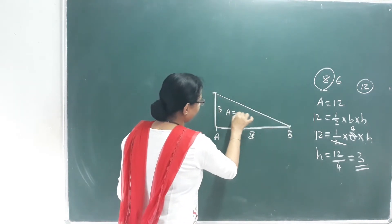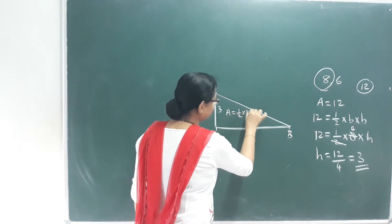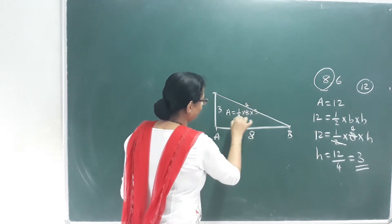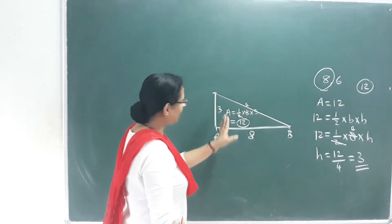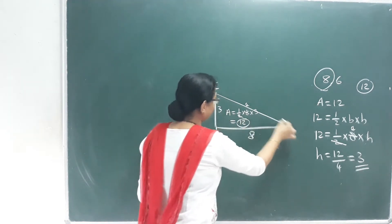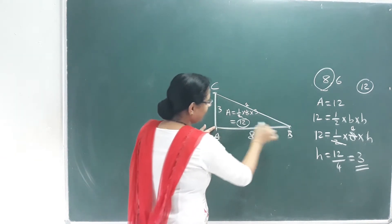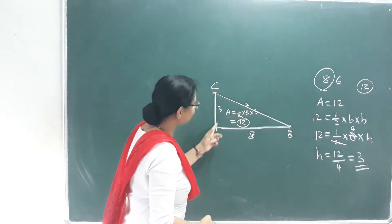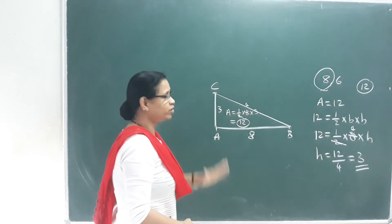If you look at the area, it equals half times 8 times 3, which gives 12. So this is 12. This confirms a valid triangle. Now we have established the base and the two sides.